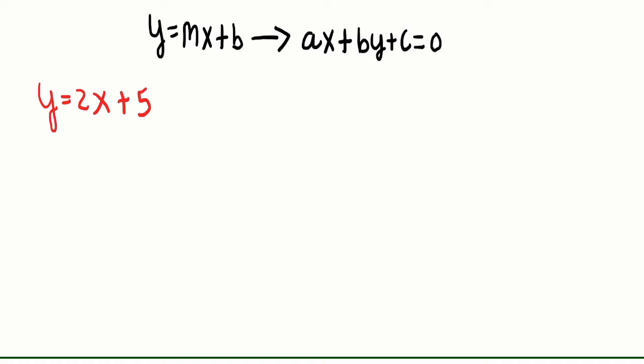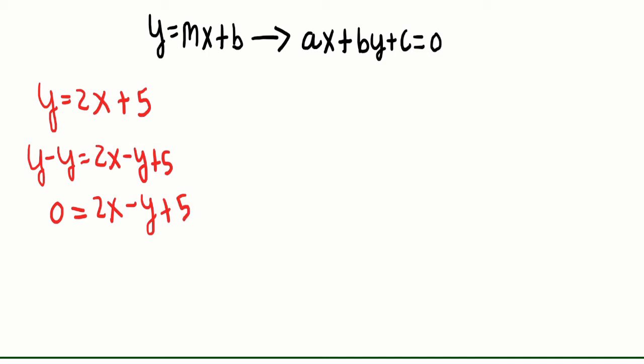To do this, we have to subtract Y on both sides, just like when we balance an equation. So we have Y minus Y equals 2X minus Y plus 5. That means Y minus Y is 0, and we have 0 equals 2X minus Y plus 5. When we write an equation in standard form, we always have to check that our A, B, and C values meet our restrictions. Here A is a positive integer, B is an integer because it's negative 1, and C is also an integer since it's 5.